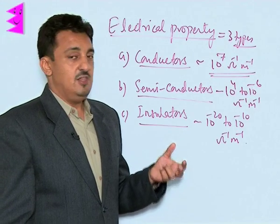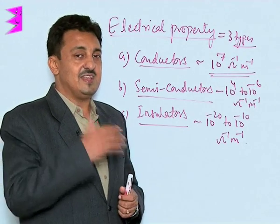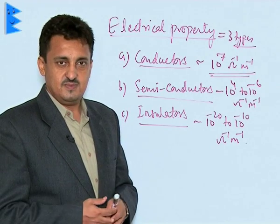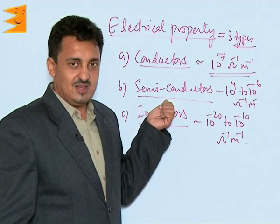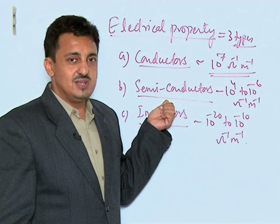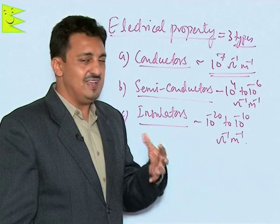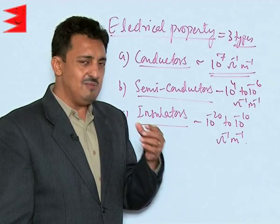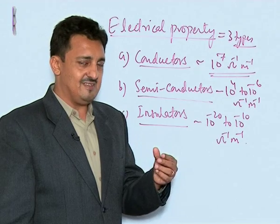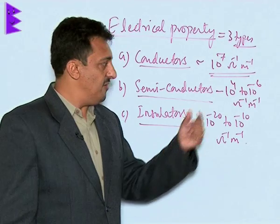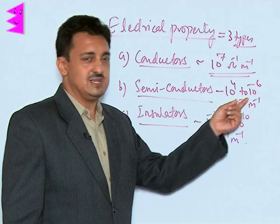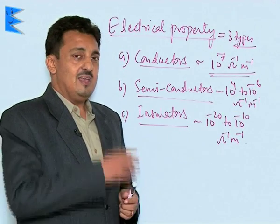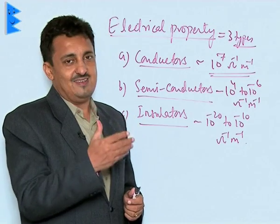In conductors, their conductivity decreases with increase in temperature because resistance increases. The second category of solids are called semiconductors. These are solids in which the electrical conductivity is of a very moderate or feeble low value — they feebly conduct electricity — and that is of the range of 10 to the power 4 to 10 to the power minus 6 ohms inverse meter inverse.